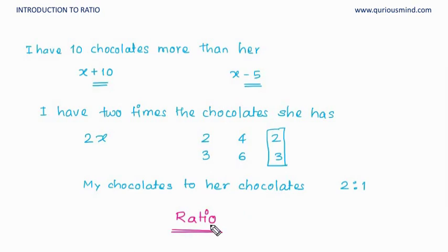We'll look at some salient features of ratio. Let's say ratio of the chocolates with me and with Isha is 2 is to 1, and ratio of the distance I run to the distance Mihir runs also can be 2 is to 1. So which means two different set of quantities and two different set of things can have the same ratio.